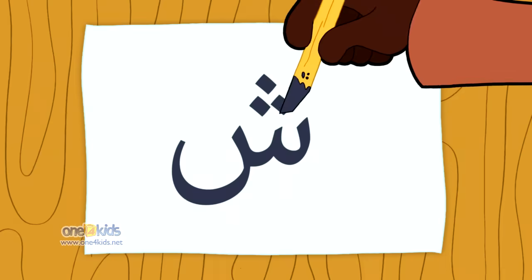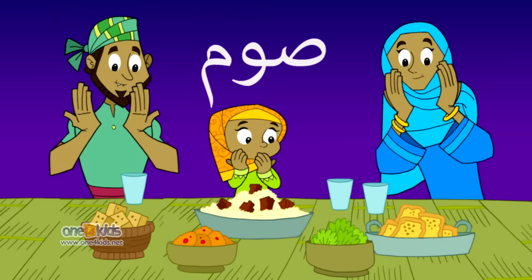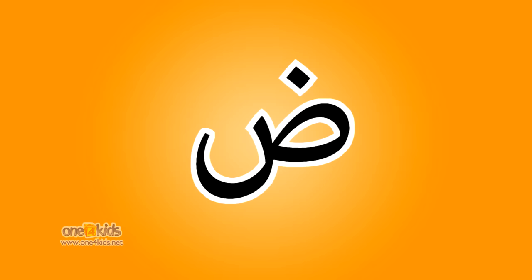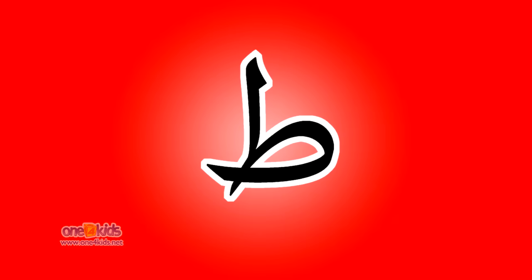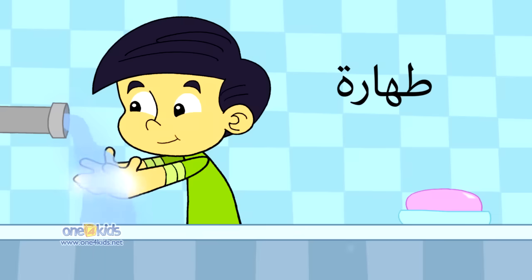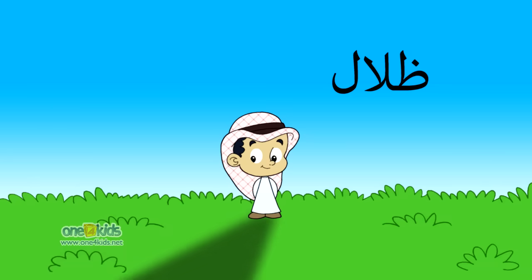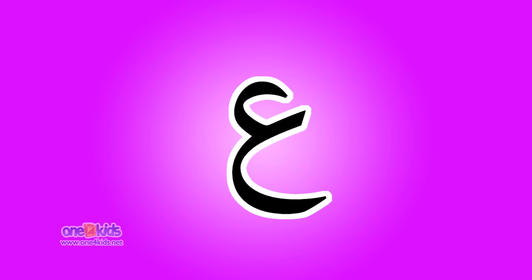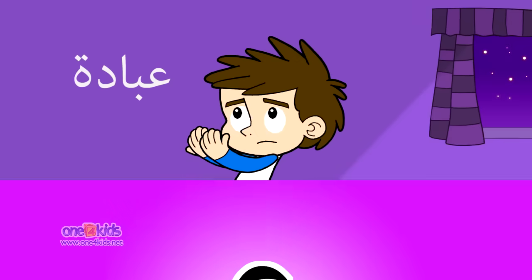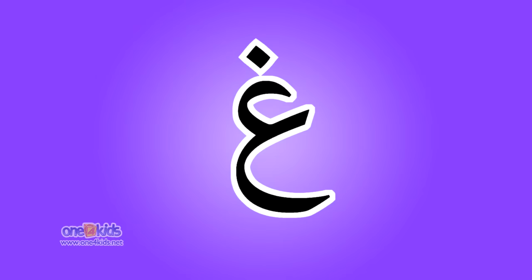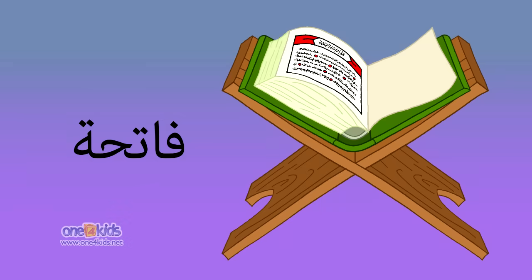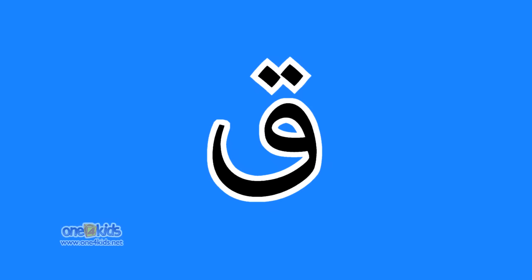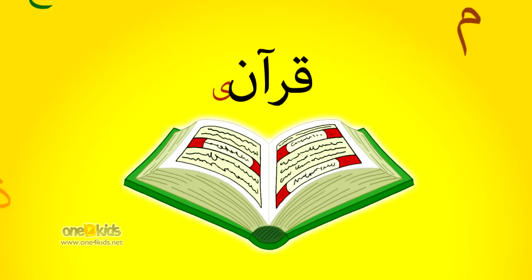Shin is for Shams, and Saad is for Song. Daad is for Dhaif, and Ta for Tahara. Dha is for Dhillah, Ain is for Ibadah, Ghain is for Ghafoor, and Fa is for Fatiha.